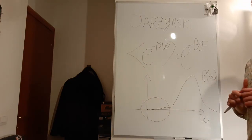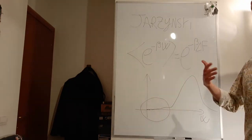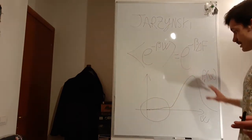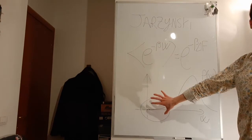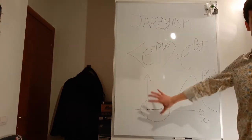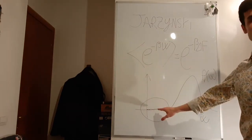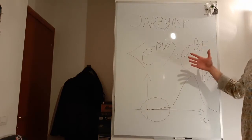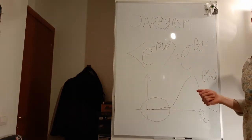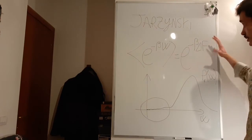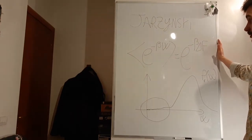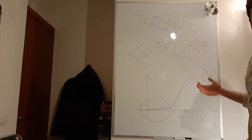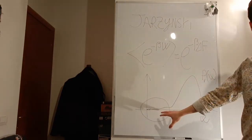In some situations this problem can be solved because you are able to have many, many results in general, and therefore the tail is also well calculated and well sampled. But usually it's not. So that's the reason why we need the Crooks theorem in some situations, because even though the Jarzynski equation is what you would like to use if possible, quite often it's not possible.